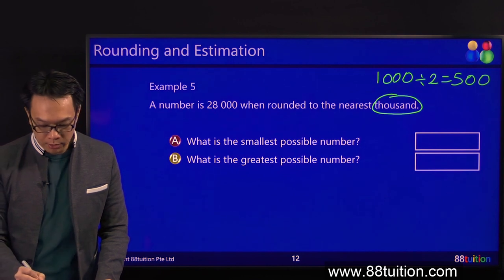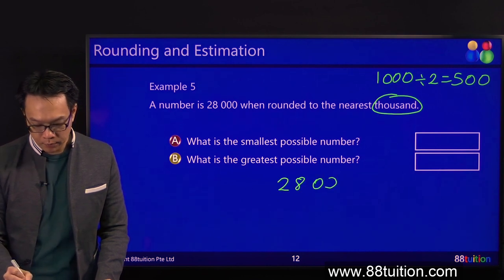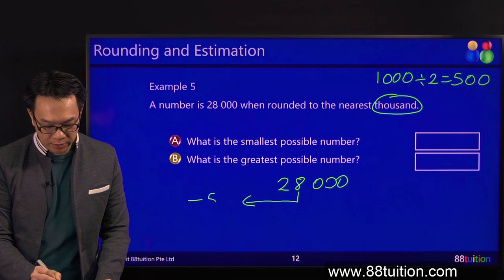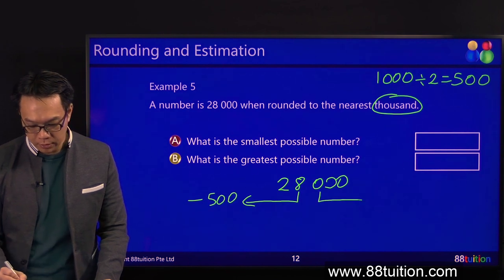What do you do next? Write the number. 28,000. On the left, minus 500. On the right, plus 500.